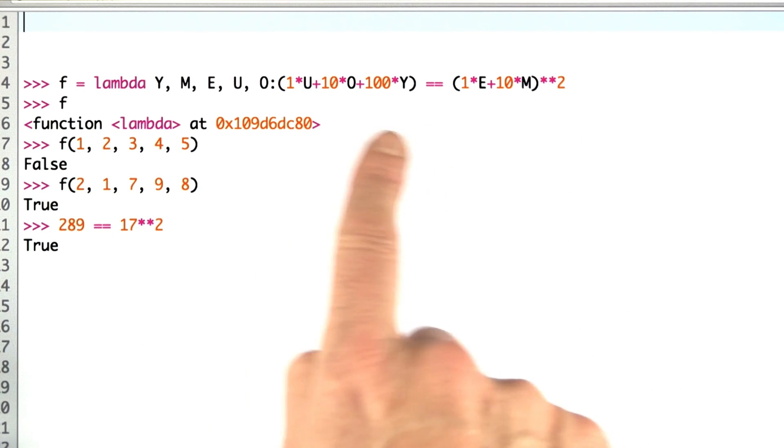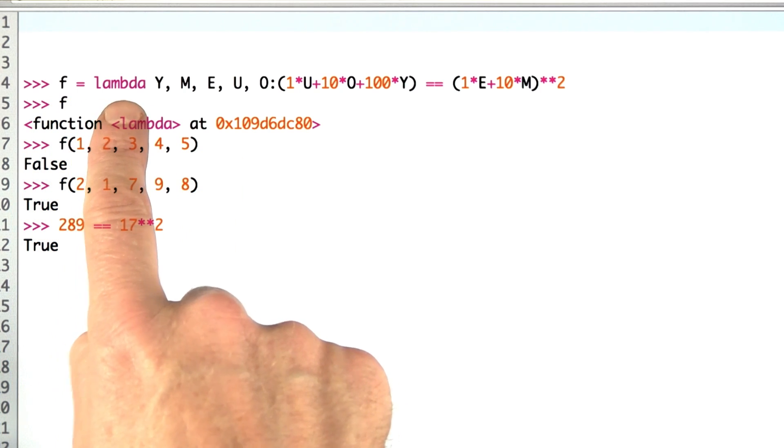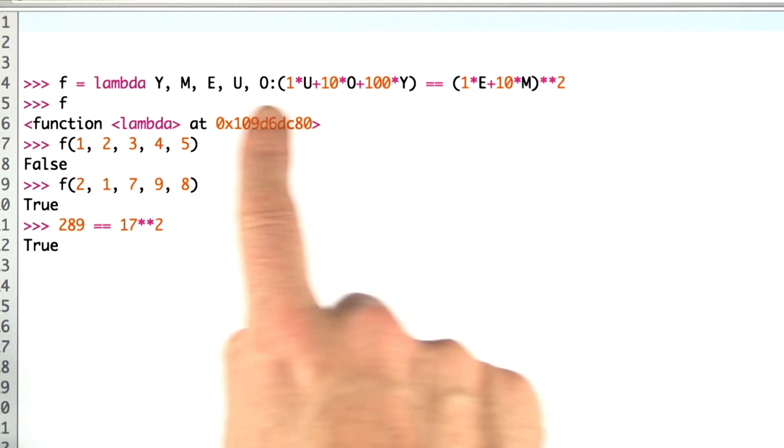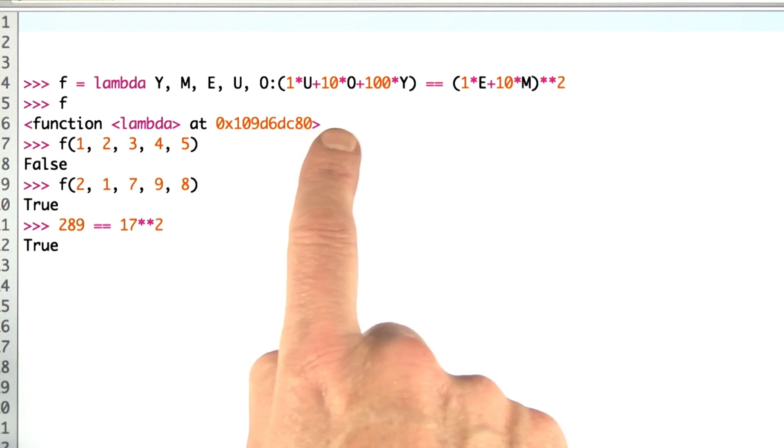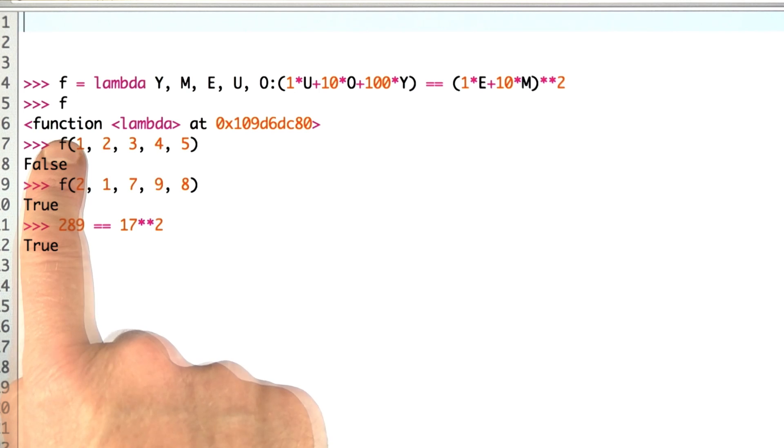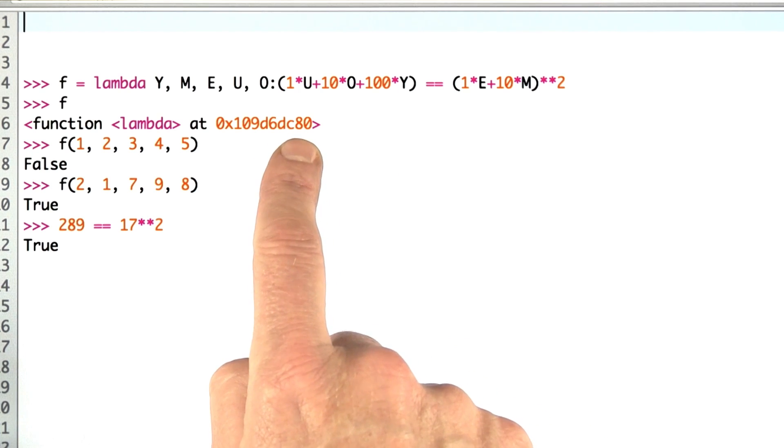Here's an example of how it all works. This I've actually typed in to the Python interpreter. I've defined a function f as a lambda expression. It looks like this. Then I've asked what f is. All Python prints out, it says that it's an object of type function which doesn't have a name other than the lambda and the address in memory where it's stored.